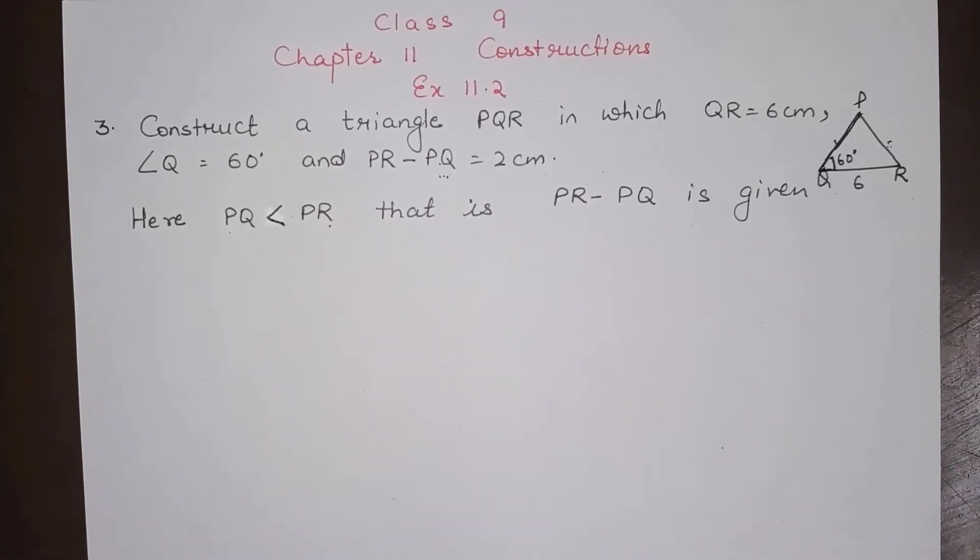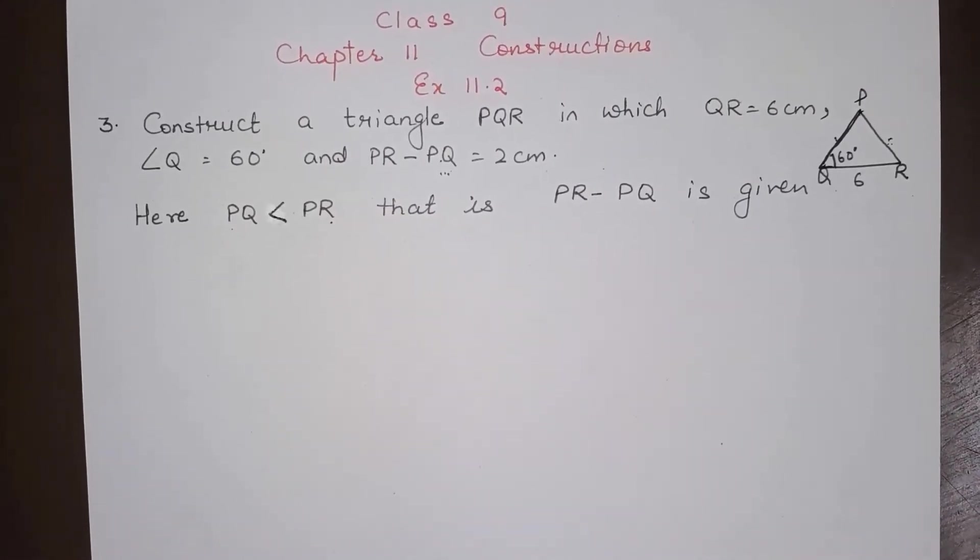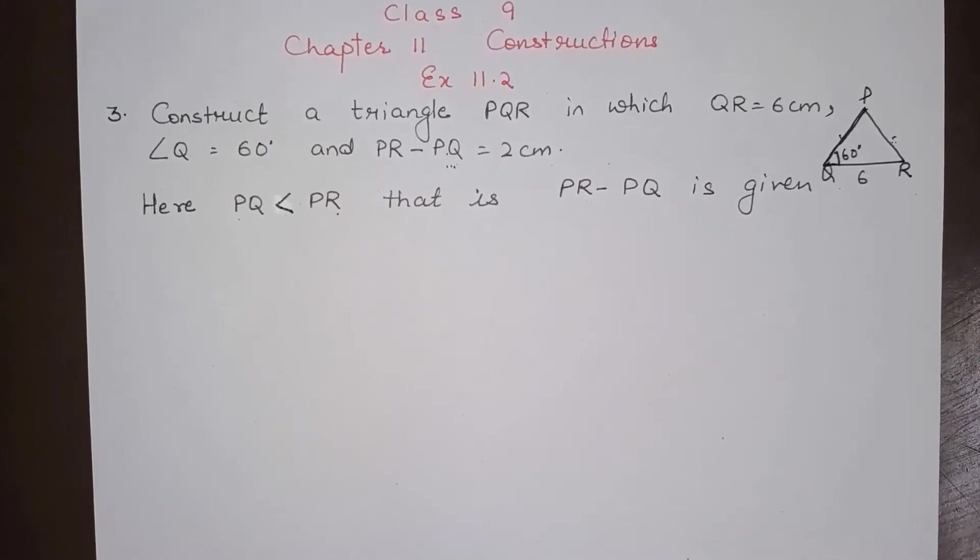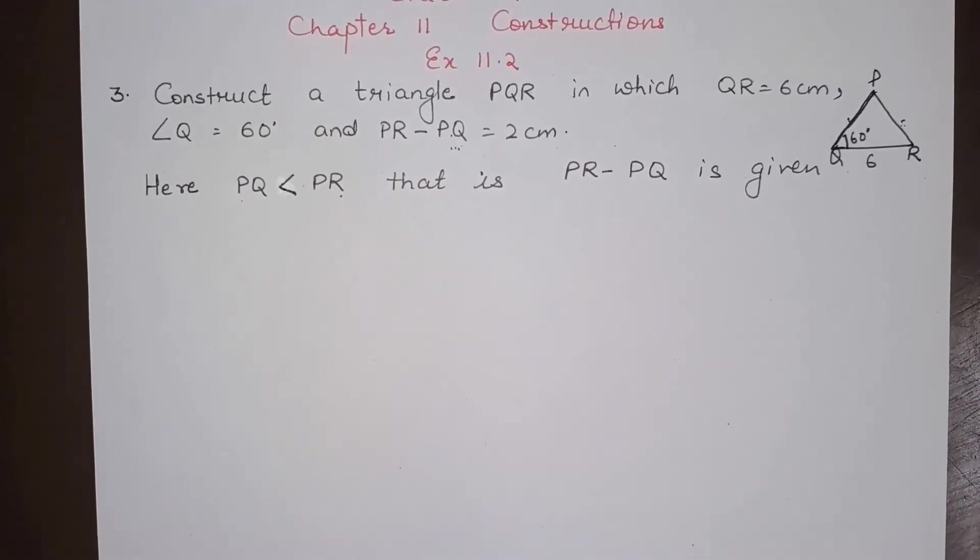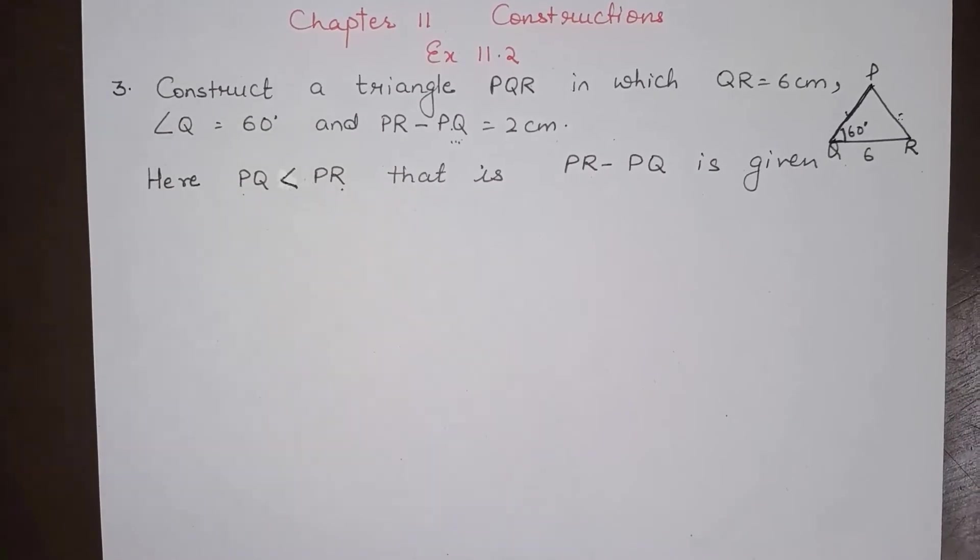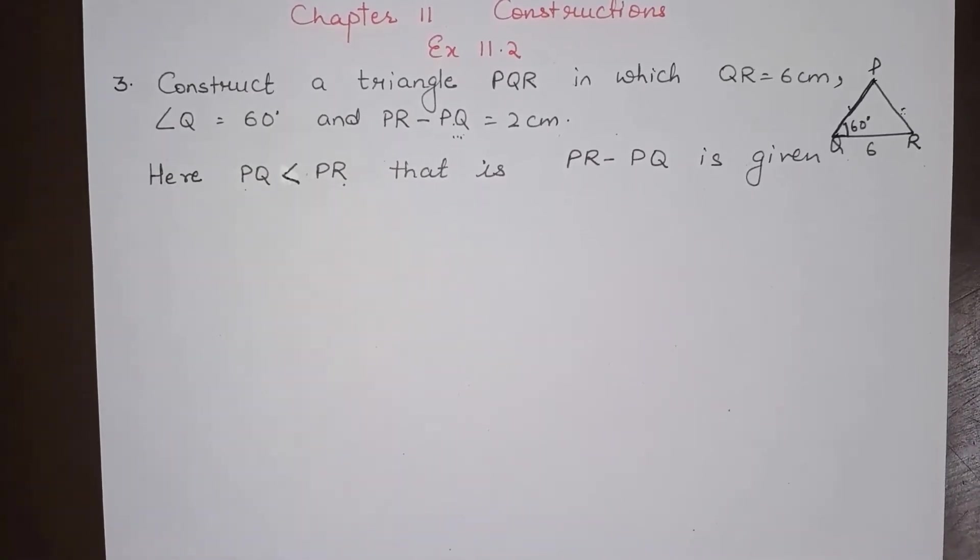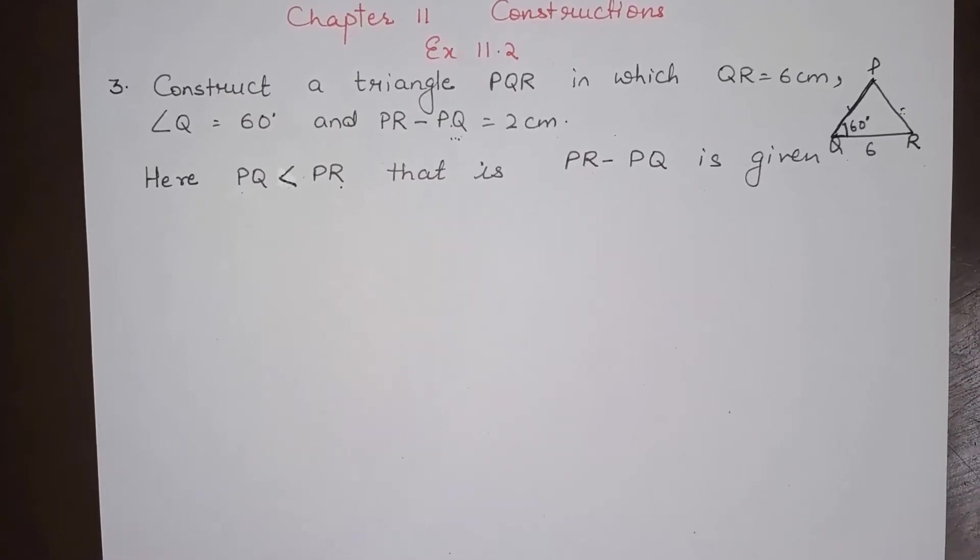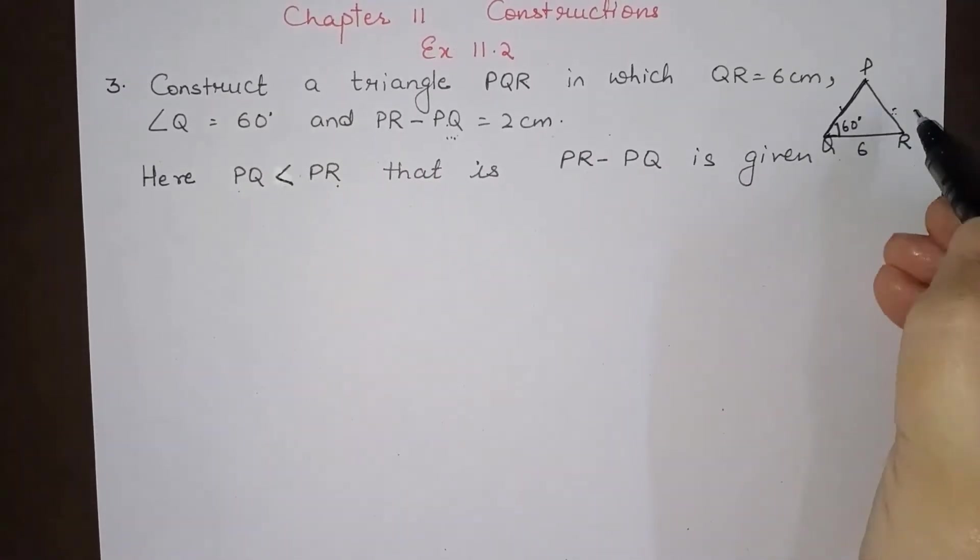Hello everyone, today we will do Class 9th, Chapter 11 Constructions, Exercise 11.2, Question Number 3. Construct a triangle PQR in which QR is 6 centimeter, angle Q is 60 degree, and PR minus PQ is 2 centimeter.